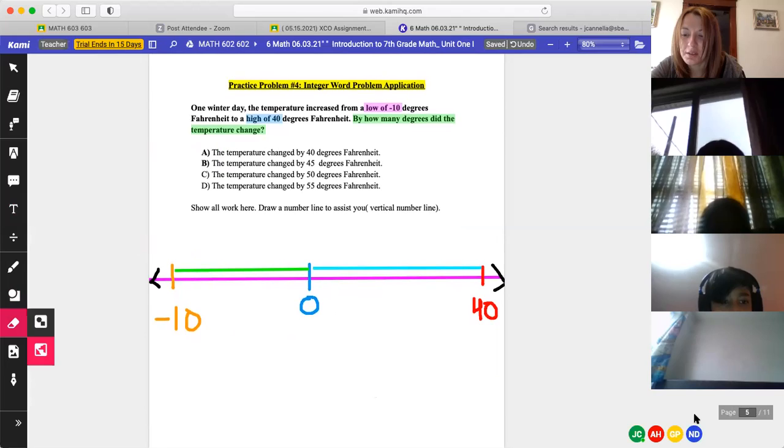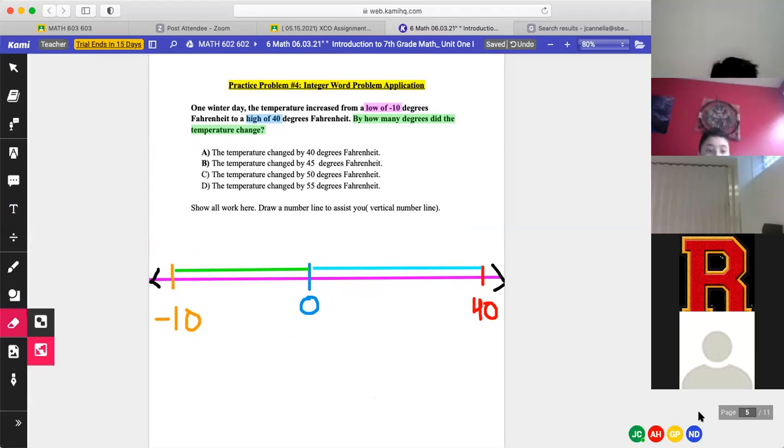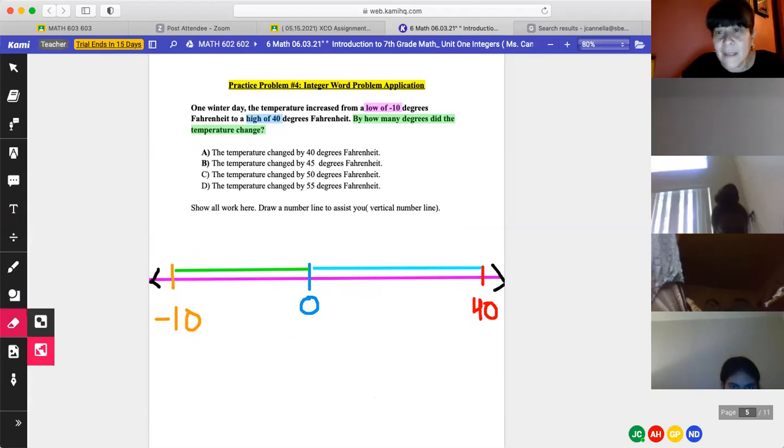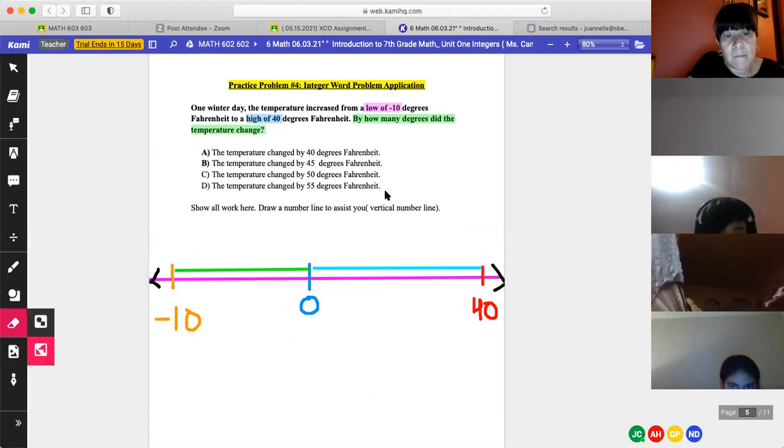Mr. R, do you want to do number four? Are you, are you, is he here? I thought I just saw him. He's here. Where do you go? Mr. R? Who's this? Who just got up? Who's that in the white shirt? Oh, Adam. I don't know. Mr. R? Let's pick on Rameses. Can you read this? Yeah, one winter day, the temperature increased from a low of negative 10 degrees Fahrenheit to a high of 40 degrees Fahrenheit. By how many degrees did the temperature change? Okay.